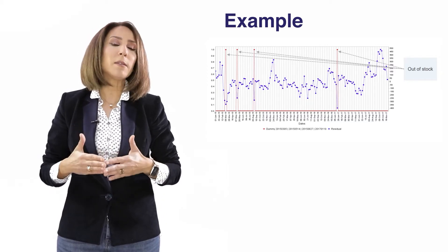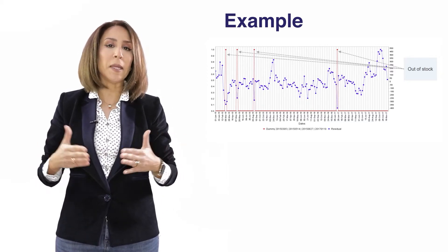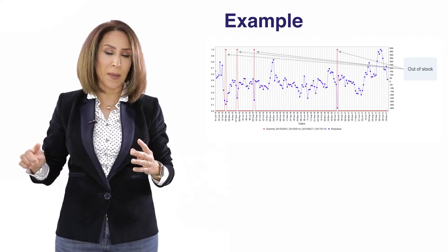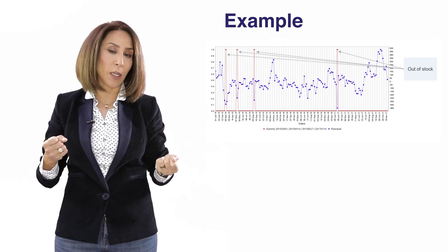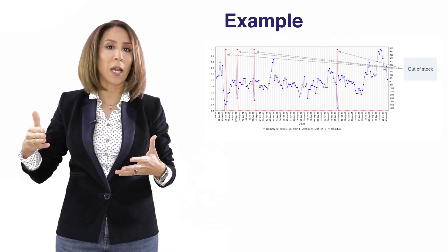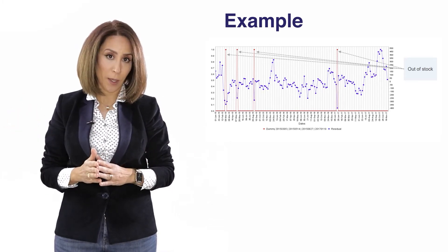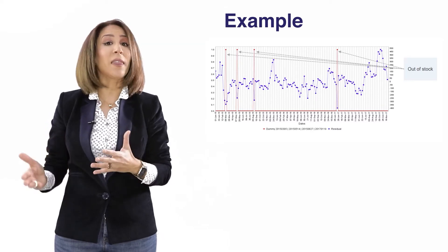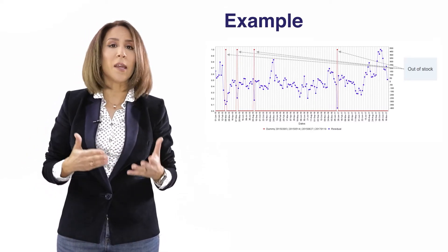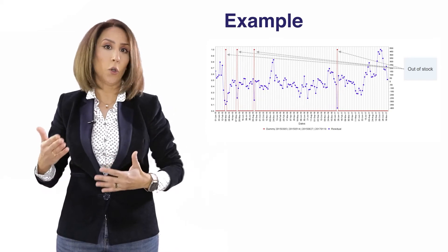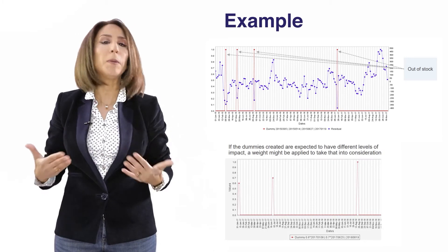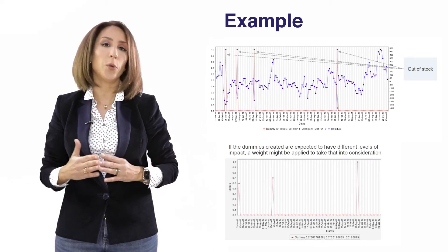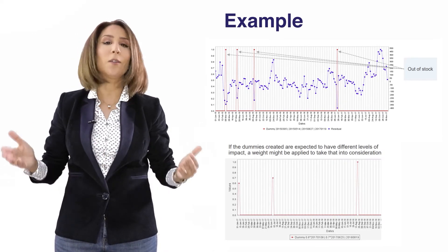Now when we create a dummy variable like this, meaning that we have one variable that contains four dummies, we are assuming in a way that the impact of out-of-stock is the same across the four times that we went out of stock. If we want to model the fact that for certain periods the out-of-stock could have had a bigger or a smaller effect than the rest, what we need to do is probably apply different weights to those dummies or split the dummies.